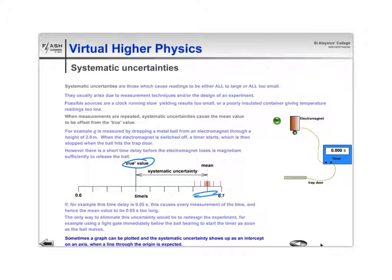Another important thing worth mentioning about systematic uncertainties is that a graph can often show them up. If you've got a graph where you're expecting direct proportion and a straight line through the origin, if that doesn't happen and it goes through the axis rather than right through the origin, then that could indicate there's a systematic uncertainty present. See you next time.